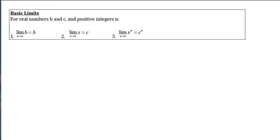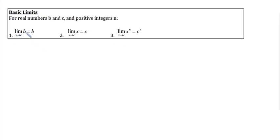Here are some very basic limits — these are all polynomial functions so we know direct substitution will work. The limit of b, where b is just a positive integer, as x approaches c is still just b. For the limit of x as x approaches c, it's just c. Here we have some exponent n (positive) — we plug c in for x and get c to the nth power as our limit.